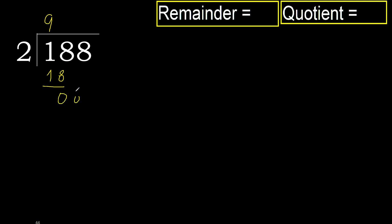Next. Eliminate 0 on this side. Bring down 8. 2 multiplied by 5 is greater, multiply by 4 is 8, is not greater.